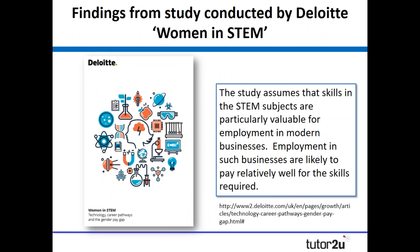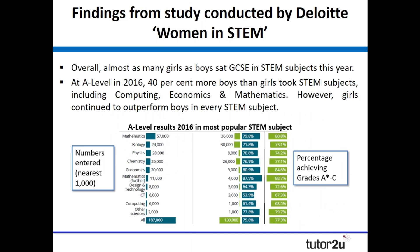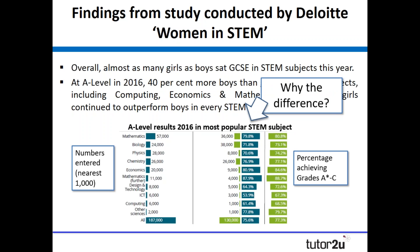The second report, from Deloitte — there's a URL at the bottom of the screen if you want to look at the full report — looks at how the impact of STEM subjects in education have made a difference for women. At GCSE level there doesn't appear to be much difference between what boys and girls take, however at A level there's a very clear difference: 187,000 boys compared to 130,000 girls taking STEM subjects. However, when you look at the performance of girls in those STEM subjects, girls outperform boys in every single subject. So the question is: why are fewer girls taking STEM subjects? The Deloitte report doesn't really try to answer that, but it's an interesting one to give to your students.